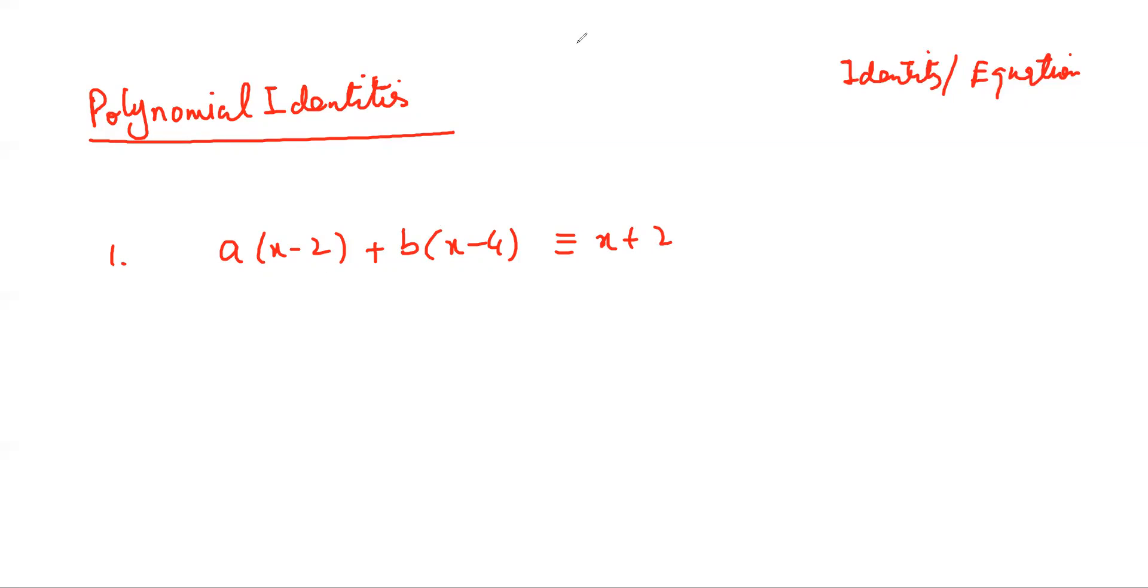Look at this. We can be very clever, we can put X equal to 2 into it. You see what will happen? If you put your X as 2 over here, so what is 2 minus 2? Yes, Hassan? The 2 minus 2 is 0.